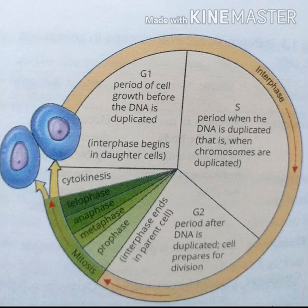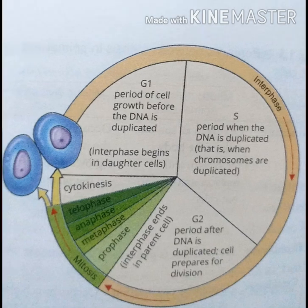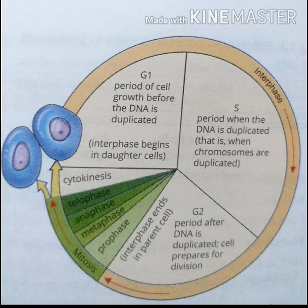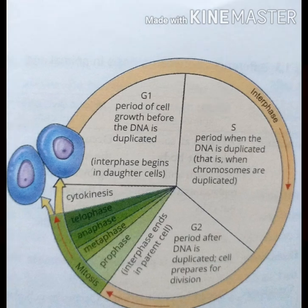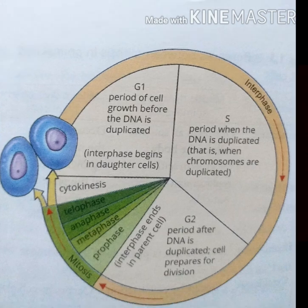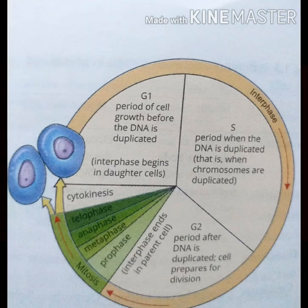The third phase of interphase is the second growth phase (G2). It is a shorter growth phase in which the RNA and protein necessary for cell division are continually synthesized. After G2, the cell is ready to start the next cell division, moving towards mitotic division starting with prophase.